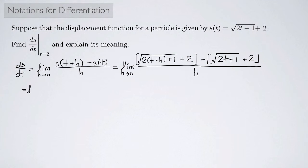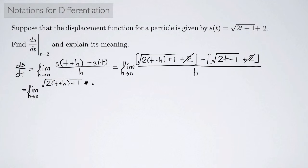So this is the limit as h approaches 0 of: s of t plus h is the square root of 2 times t plus h plus 1, all under the square root, plus 2. Then this whole thing is minus the square root of 2t plus 1, plus 2. All over h. The plus 2 and minus 2 cancel when I distribute the minus sign, so I just have the square root of 2t plus 2h plus 1 minus the square root of 2t plus 1, all over h.